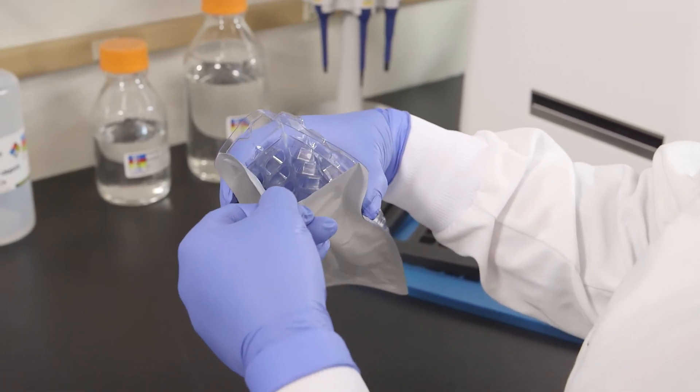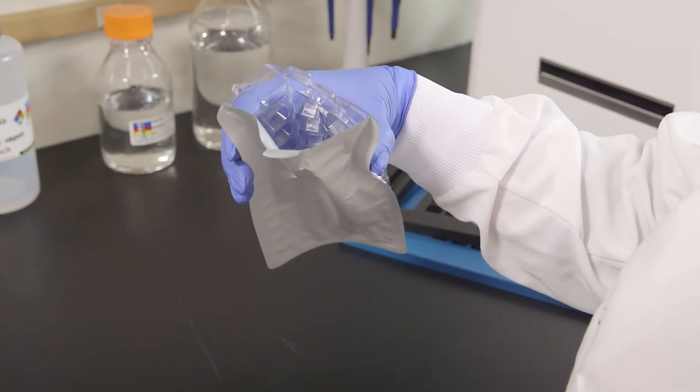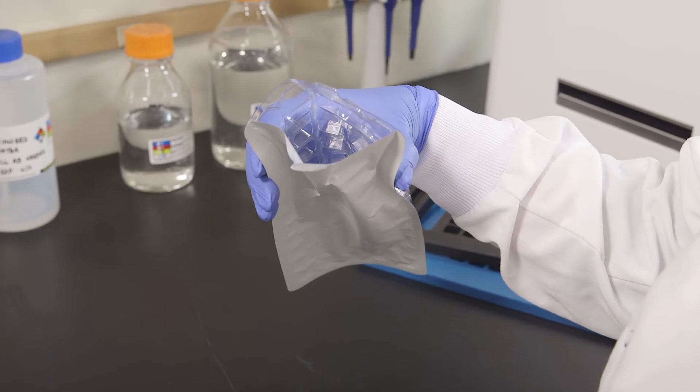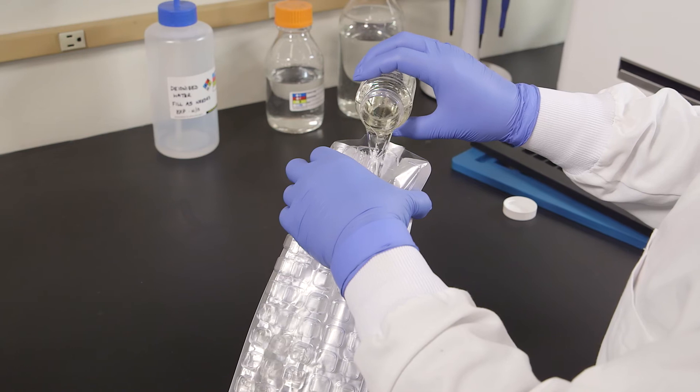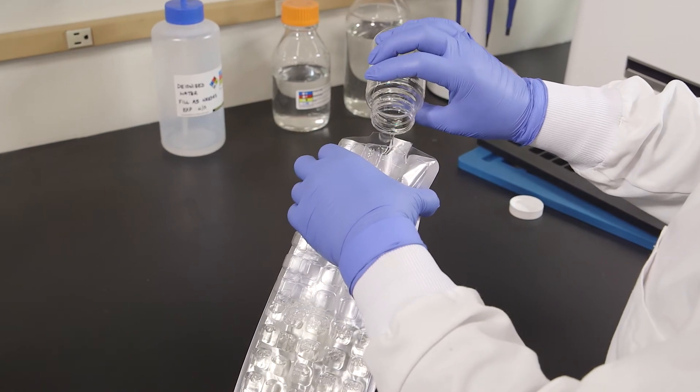Open the Quantitray by gently pulling the foil tab away from the plastic side. Be careful not to tear the tab. Do not touch the inside of the tray. Pour the sample mixture into the Quantitray avoiding contact with the foil tab.